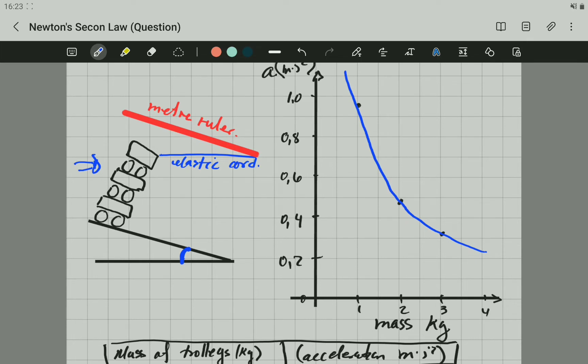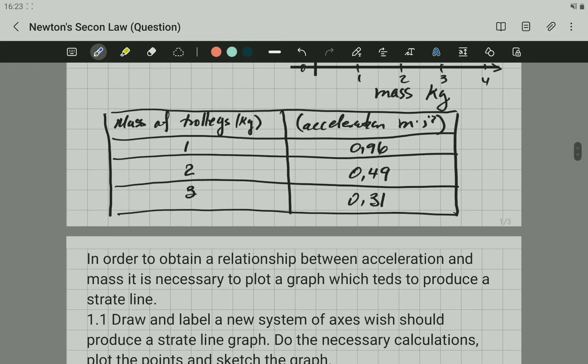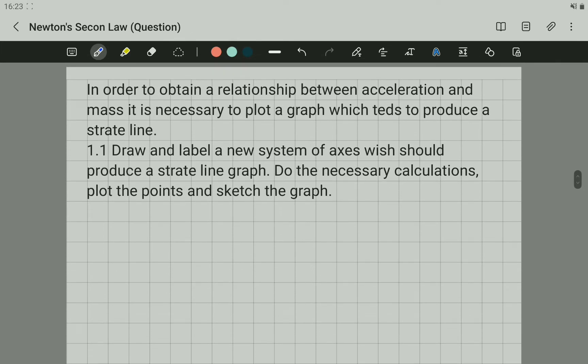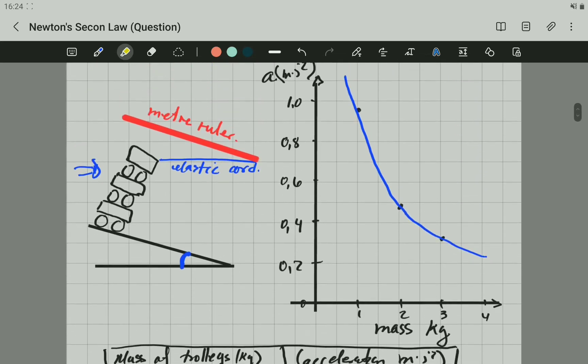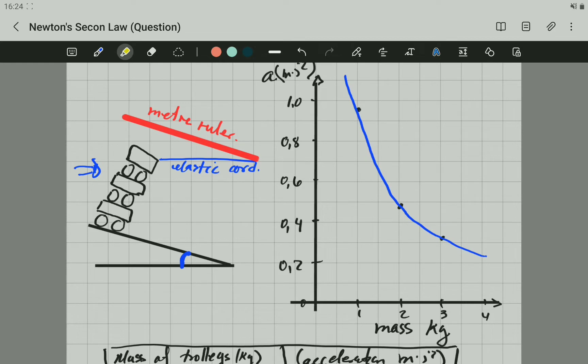And here is the graph that the learner plotted. The question says, in order to obtain a relationship between acceleration and mass, remember this is the main idea of the experiment, it is necessary to plot the graph which tends to produce a straight line. You can see here that the line is not straight. It's a curve.